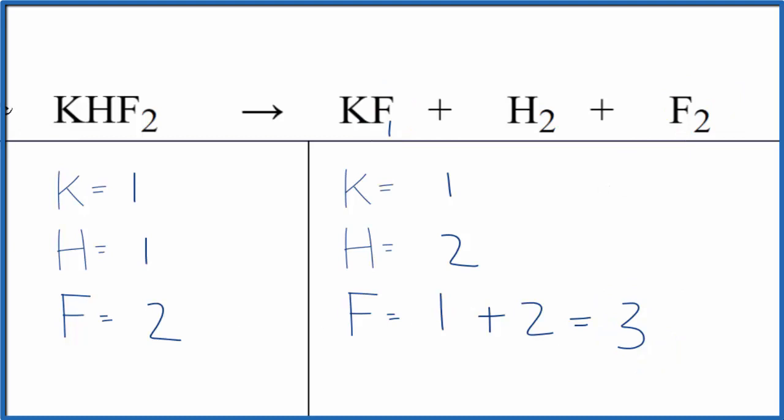To balance the reaction, let's put a two as our coefficient here in front of the KHF2. That should balance the hydrogens. We have one times two, and that gives us two potassiums. One hydrogen times two. That balances the hydrogens. And two times two, that gives us four fluorine atoms.